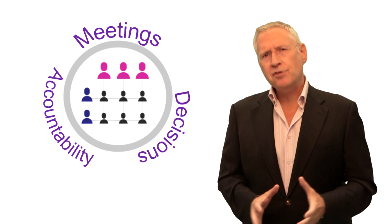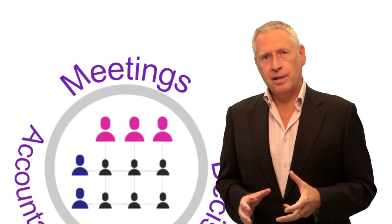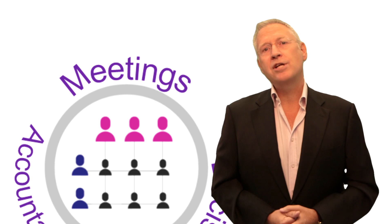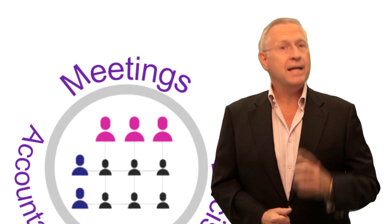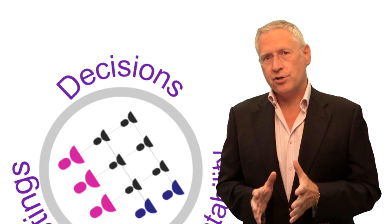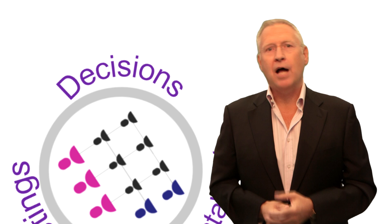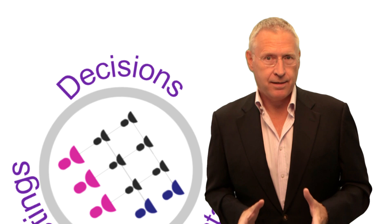When companies introduce a more integrated organisation it's often an explicit objective to break the silos and increase the amount of communication and collaboration across the business. But be careful what you wish for. When we take the traditional vertical structures of function and geography and we add new horizontal processes and reporting lines, people and business issues just become more connected. There are more people involved in cooperation and decision making.